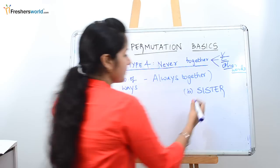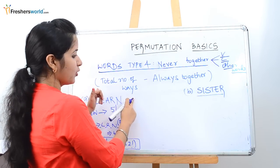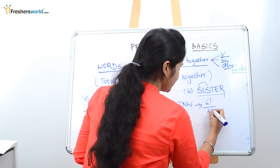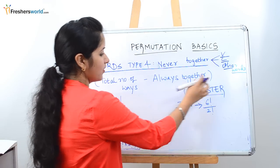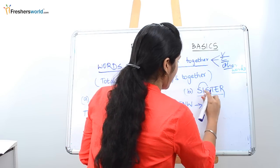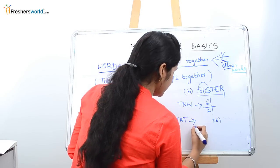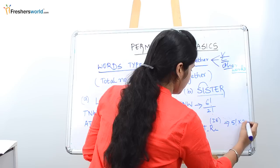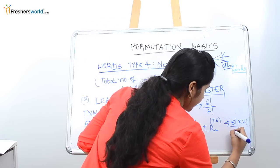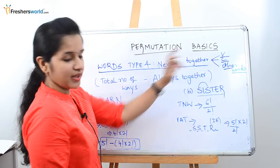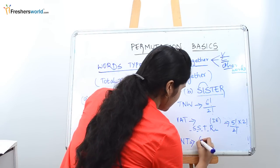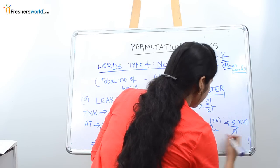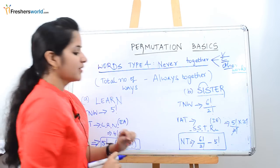Let's take another example with a repeated word — the word SISTER. For total number of ways, we have 6 factorial ways. S is repeated twice, so divide by 2 factorial. Now for vowels always together: I and E are together, and the remaining letters are S, S, T, R. There are 5 spaces, which is 5 factorial into 2 factorial, but S is repeated twice so divide by 2 factorial. So for never together, the answer is total number of ways — 6 factorial divided by 2 factorial — minus always together: 5 factorial divided by 2 factorial, and the 2 factorials cancel, giving 5 factorial.